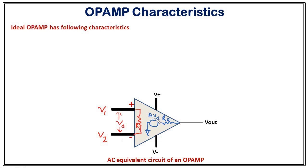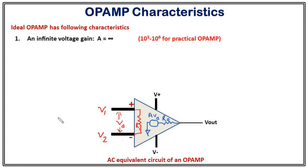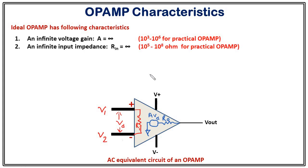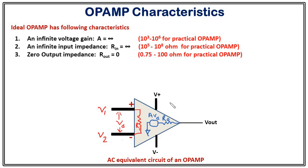Let's discuss the characteristics of an ideal op amp. The very first characteristic is infinite voltage gain, that is A must equal infinity for an ideal op amp. But in practice, just like a 741, we have a voltage gain of around 10^5. In practice you will find A varies from 10^3 to 10^6, which is also very high — close enough to infinity that we can approximate it. The second characteristic is infinite input impedance: Ri must equal infinity. In practice we have 10^5 to 10^8 ohms at the input terminal, which is very high so we can approximate it to infinity. The third characteristic is zero output impedance: R_out must equal zero. In practice we have 0.75 to 100 ohms.